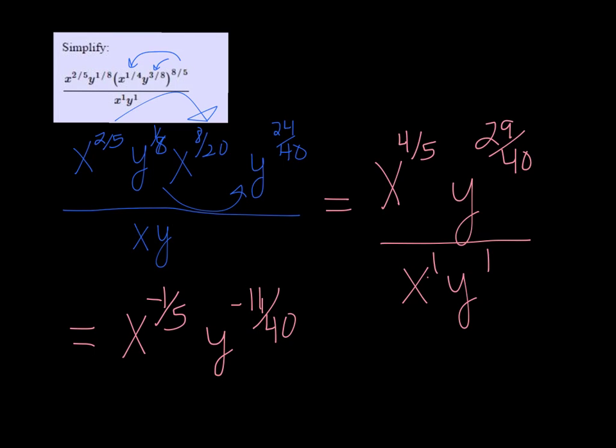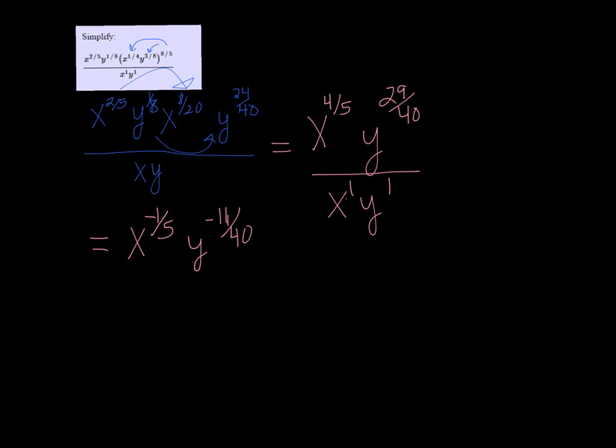Usually you don't want to leave negative exponents, so we'll rewrite that as 1 over x to the one-fifth, y to the 11-fortieths.